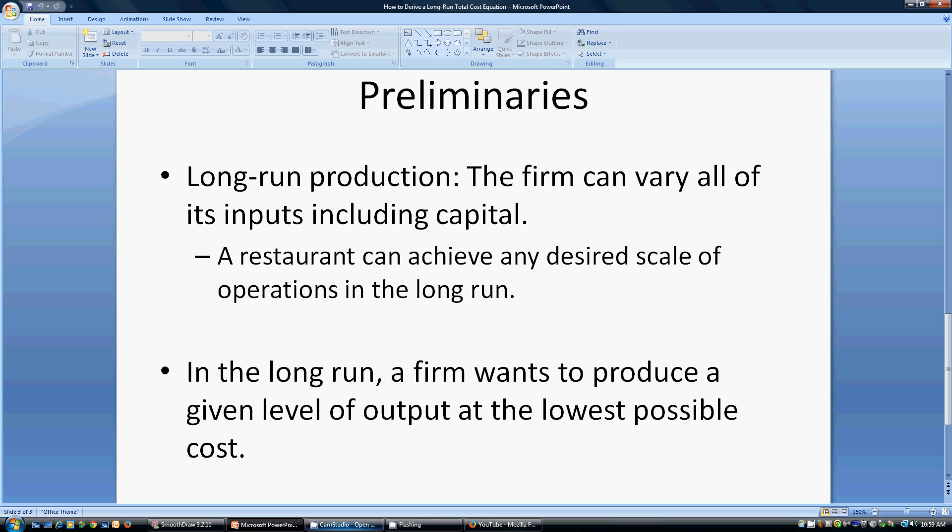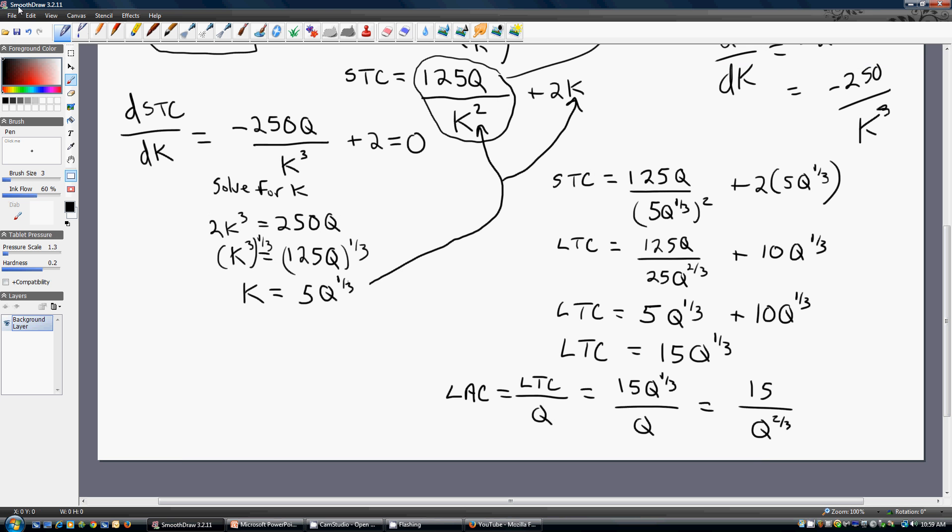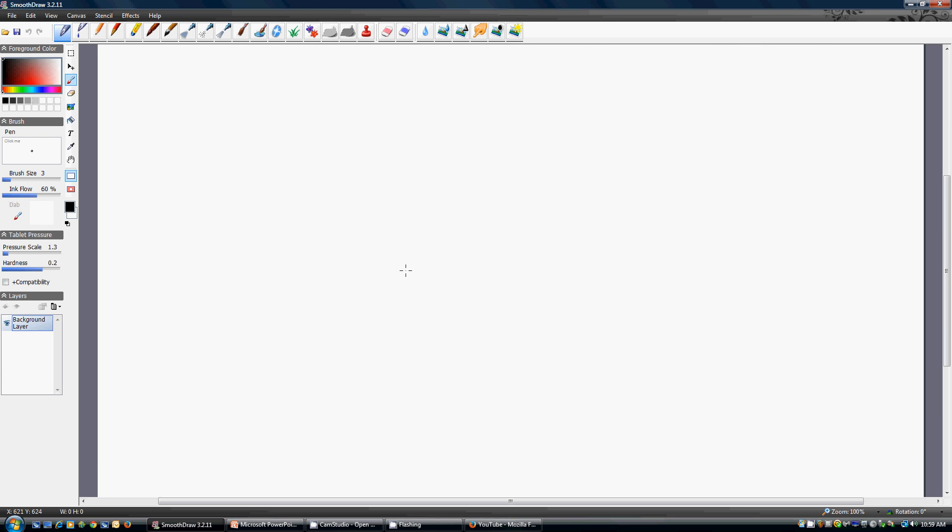Let's now look at the mathematics behind this. We're going to start with a production function, where Q is the quantity of output. That's going to be multiplied by L units of labor times capital, and we're going to square capital, and then divide that by 5. So this is the firm's short-run production function. Quantity of the firm's output equals units of labor times units of capital squared divided by 5.